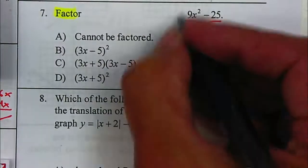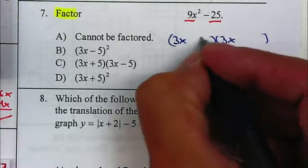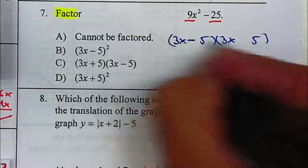So that will be the difference of two squares. Factors of 9x squared will be 3x and 3x. Factors of 25 will be 5 and 5, one negative and one positive.